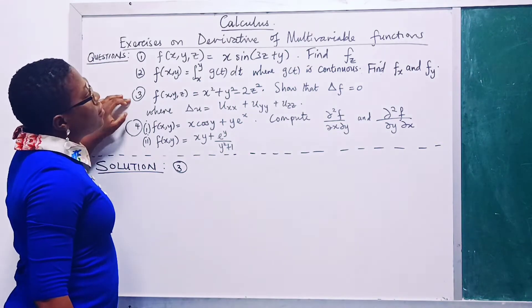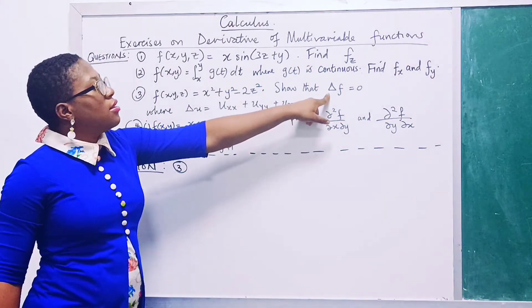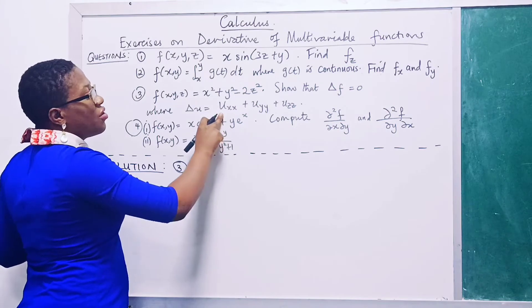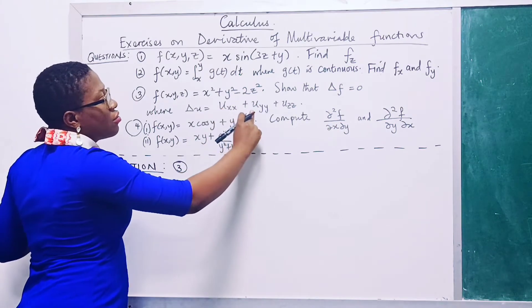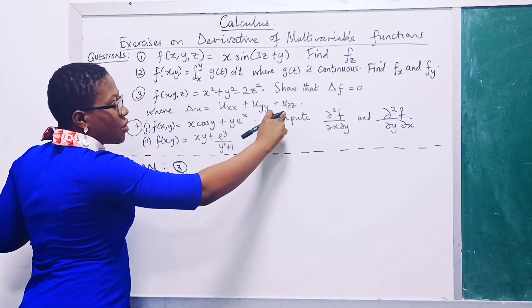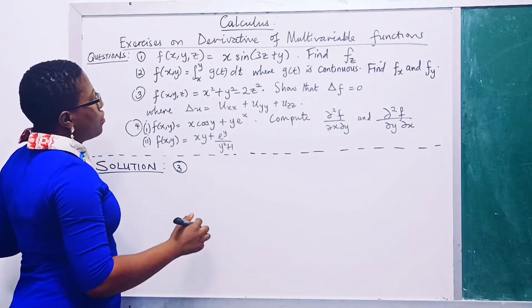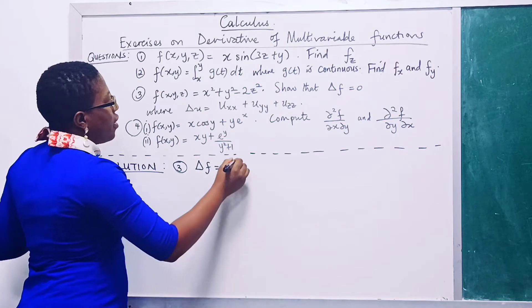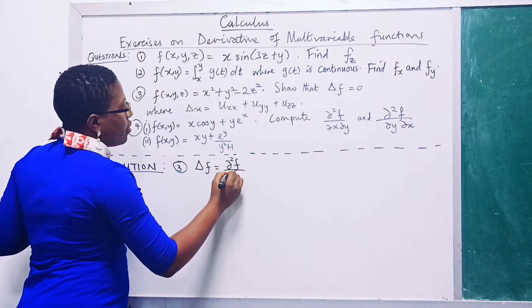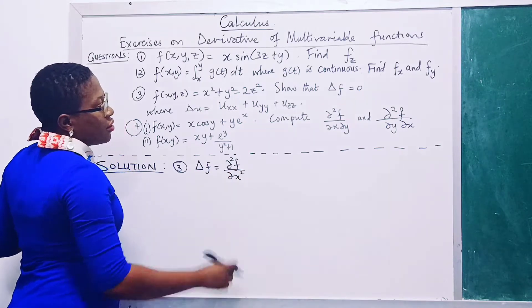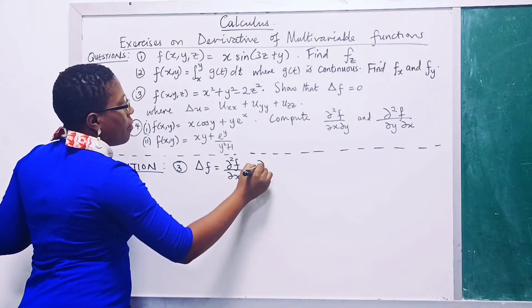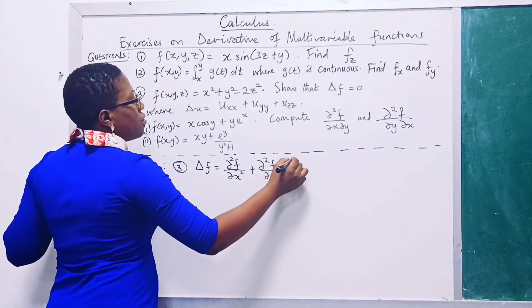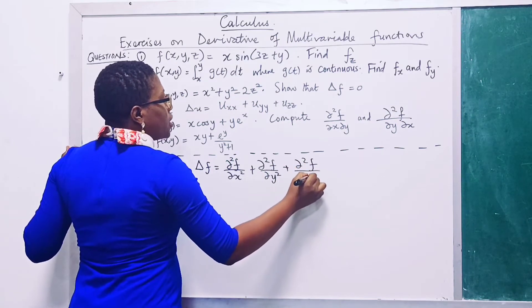For number three, we want to show that the Laplacian of f is zero. The Laplacian is defined as the second partial derivative with respect to x, plus the second partial derivative with respect to y, plus the second partial derivative with respect to z — all added together.